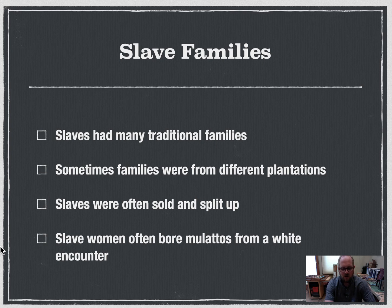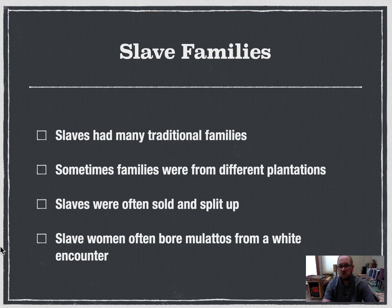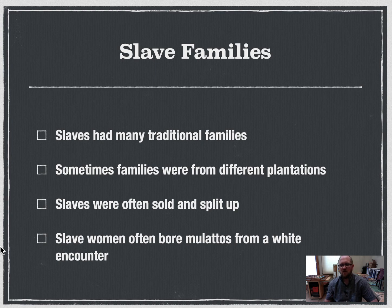Slaves had their own families on the plantations. In most cases, they developed traditional families, though families could be split up and sold apart. There were also some non-traditional family structures, including sexual relationships without formal marriage. And because white masters were having relations with their slave mistresses, many slave women gave birth to mulatto children — half white, half black — who would typically be treated as slaves and not given the benefit of being recognized as relatives of the master.